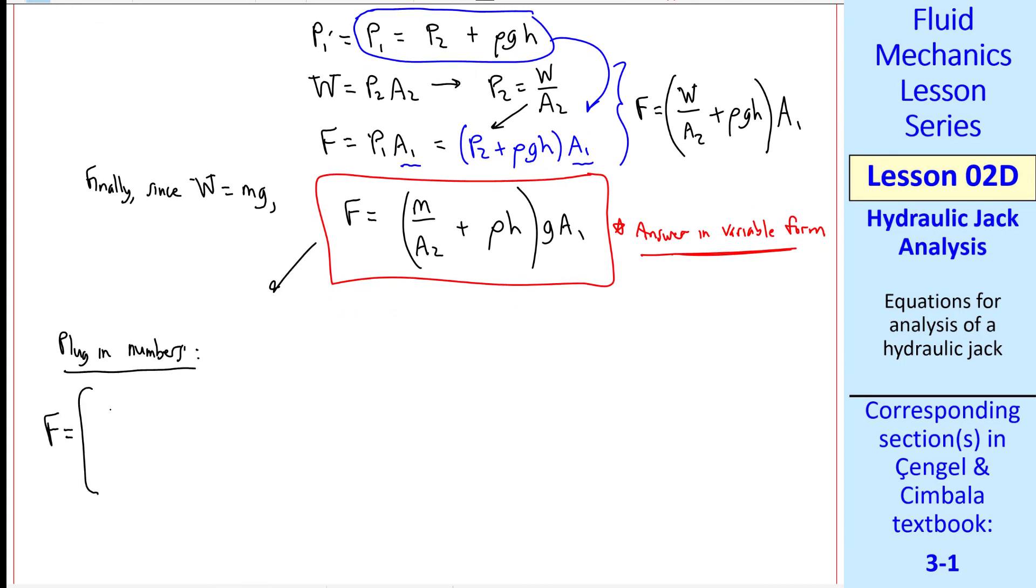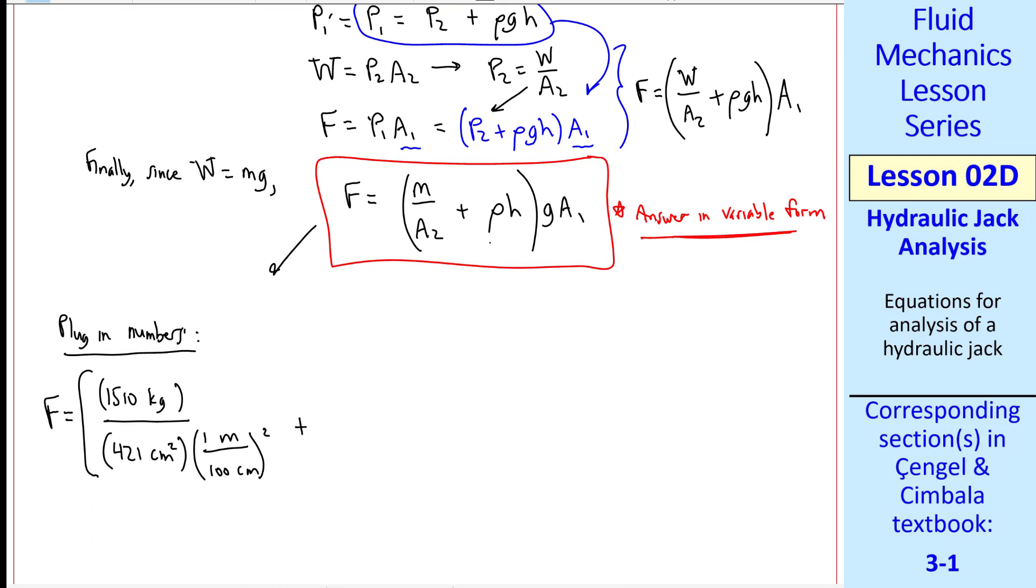F is equal to the quantity mass over A2. I'll put in a unit conversion. 1 meter is 100 centimeters, and we have to square that. Plus rho, since we're given specific gravity, I'll write rho as specific gravity times rho of water, or 0.765 times 1,000 kilogram per meter cubed. And then H here is given as 1.65 meters. Close bracket. G, 9.807 meter per second squared.